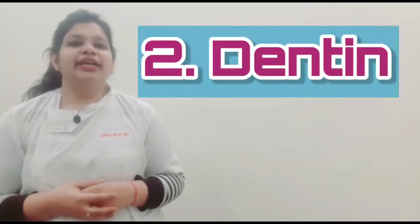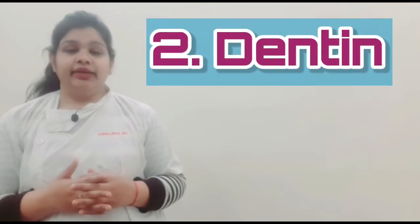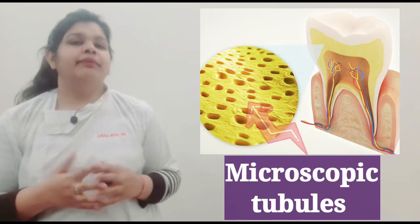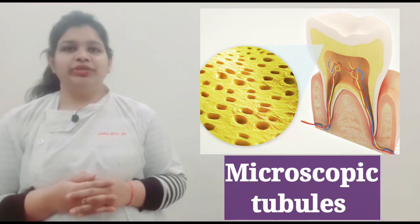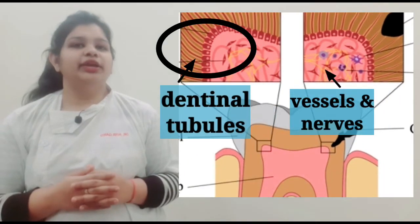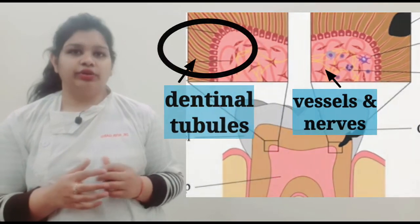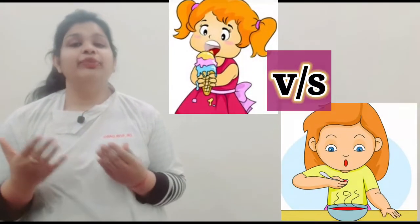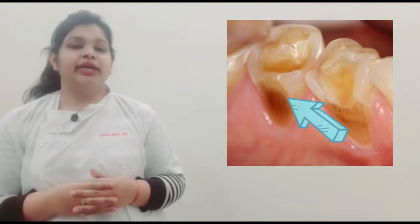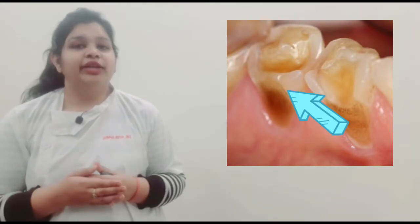The second layer is dentine. It is a slightly yellowish thick layer made up of microscopic tubules. Dentine is more sensitive than enamel as it plays a communicating role with the nerves of our tooth. Without dentine, our tooth will not be able to differentiate between an ice cream and a hot soup. So if there is an infection in dentine, then sensitivity starts in our teeth.